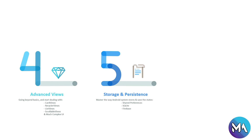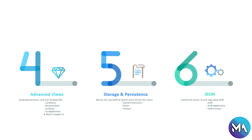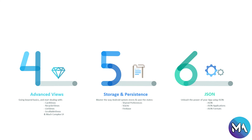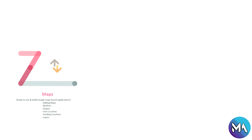In section five we will learn and master how the Android system stores and saves states using SharedPreferences, SQLite, and Firebase. In section six, we unleash the power of your app using JSON — JavaScript Object Notation — covering JSON applications and JSON formats. In section seven, we enter the world of Google Maps-based applications, including adding maps, markers, shapes, user location, sending locations, layers, and much more.